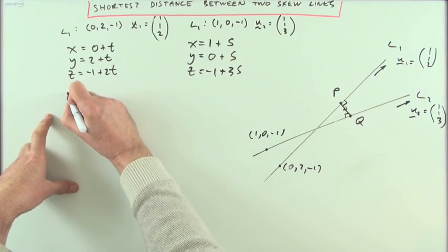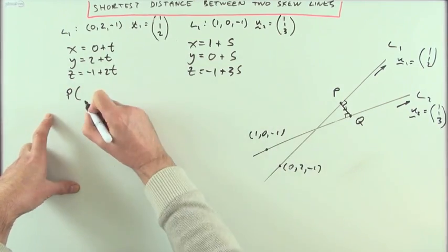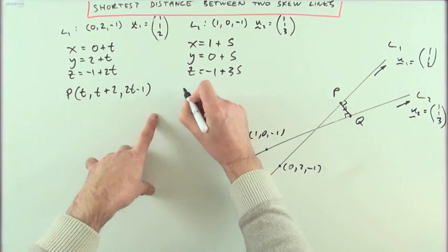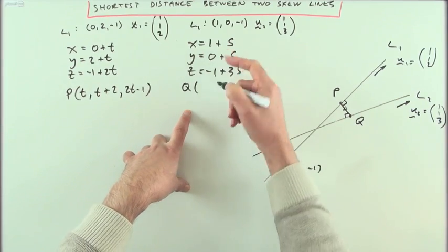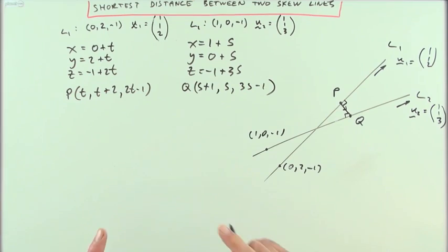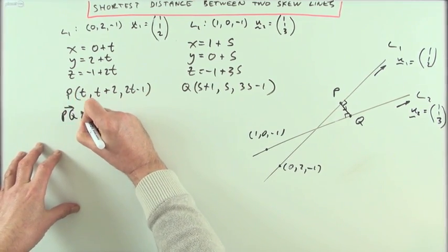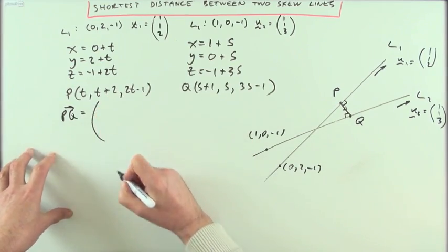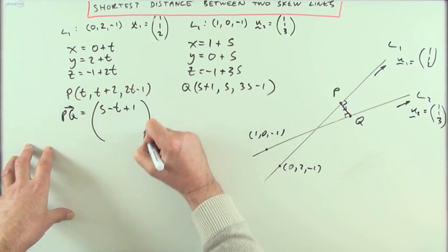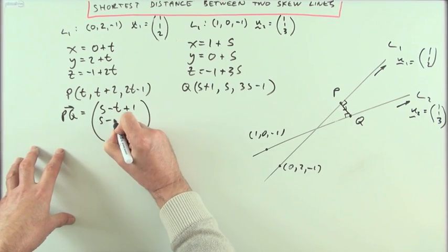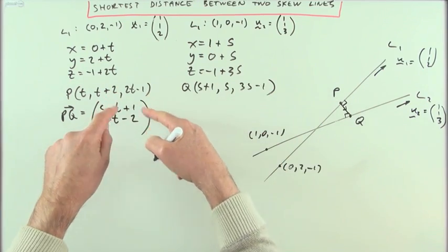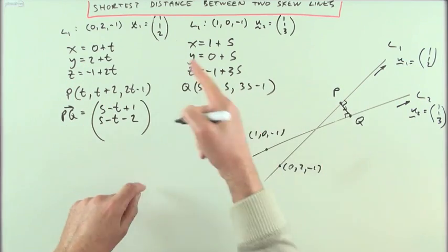Putting that together: P is the point (T, T+2, 2T-1) and Q is the point (S+1, S, 3S-1). I can now form the vector PQ by subtracting: the components are (S - T + 1), (S - T - 2), and (3S - 2T).